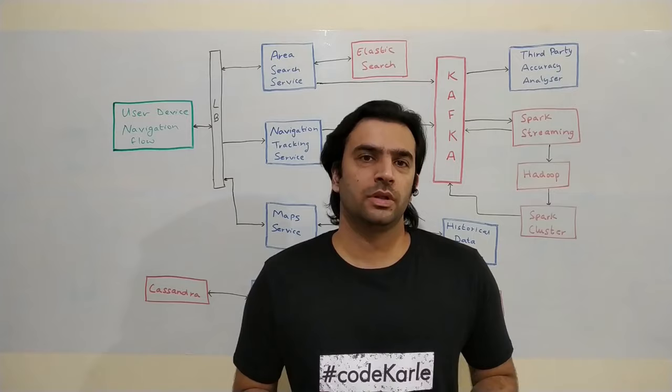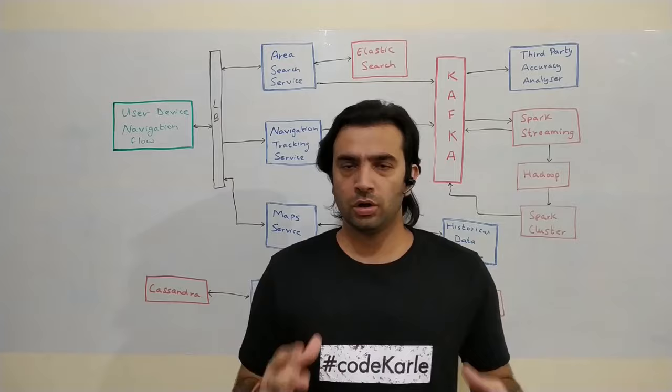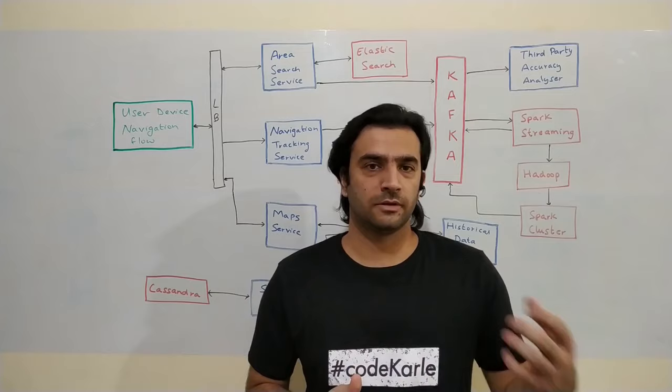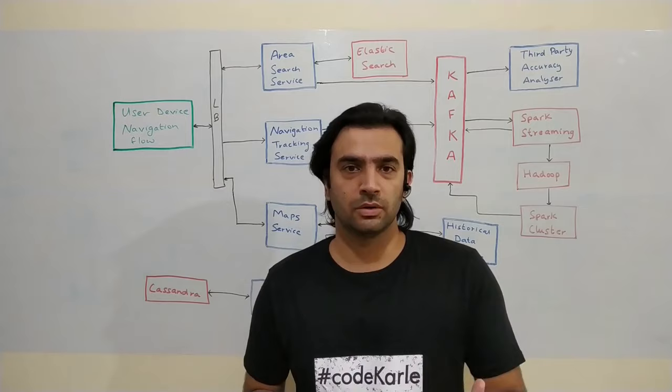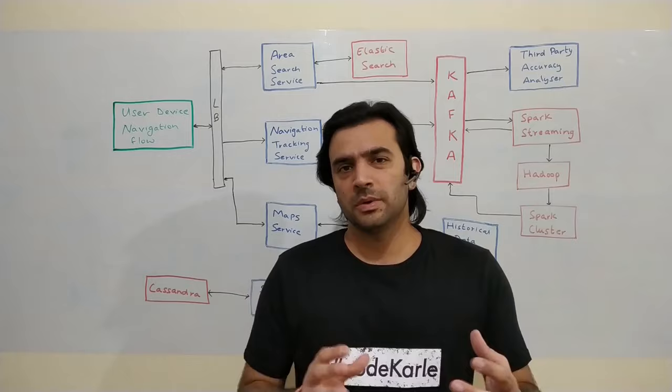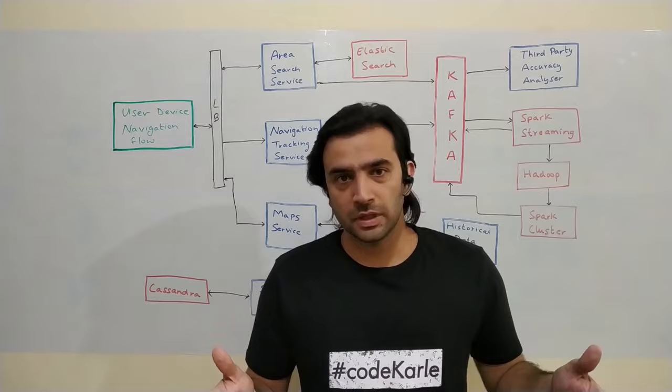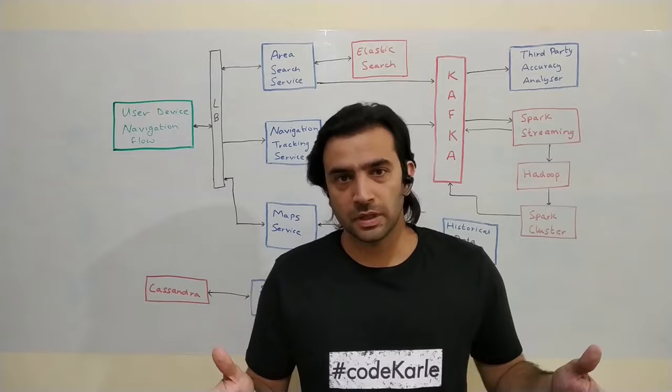Now let's look at the user journey when they want navigation from point A to point B. Normally users search for a location, which gets converted to a lat-long. The area search service handles this in two ways: it provides fuzzy searching over areas stored in Elasticsearch, converting a place name to a lat-long with description; and it does dynamic address resolution, converting a given address to a lat-long.